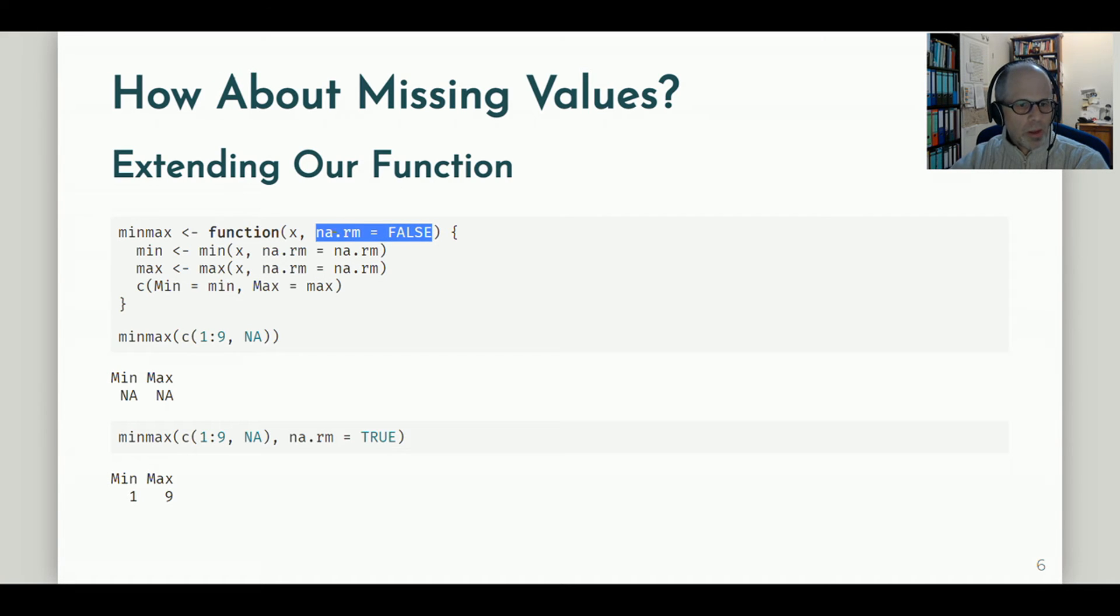If I don't specify the na.rm parameter, note that in the function definition I provided a default, then when I use the function I get NA back. But I can override the default and explicitly specify na.rm equals TRUE, and then I get a valid result back. So far so good, but do we like this coding style?